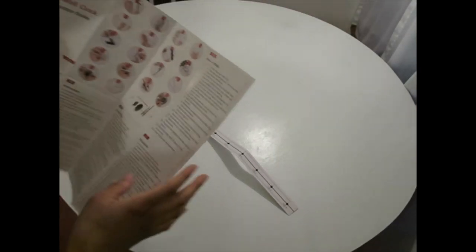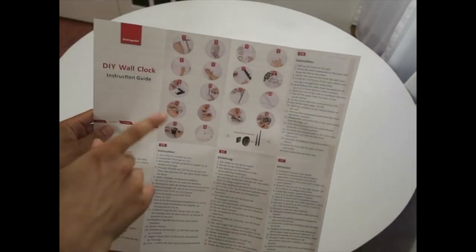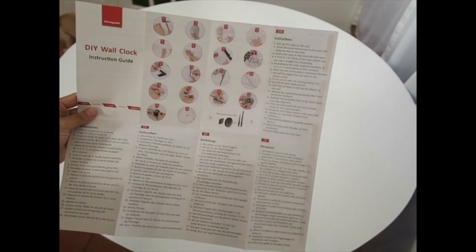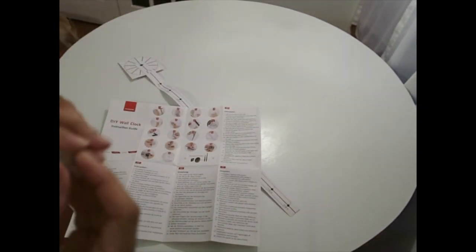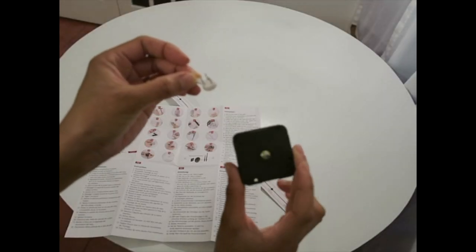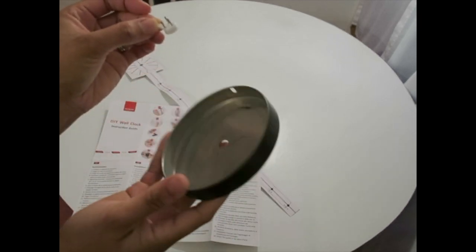So these are the instructions that come with this, and these instructions are extremely vague. It's telling you to nail the hook on the wall. This is the hook right here. This is the mechanism. This is the little circular piece.